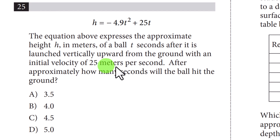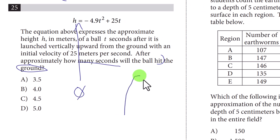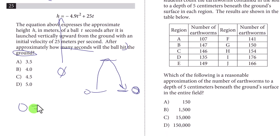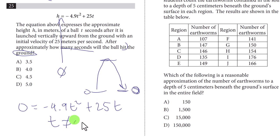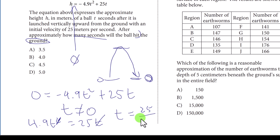Question twenty-five: how many seconds until the projectile hits the ground? Set height to zero: 0 equals negative 4.9t² plus 25t. We want the solution where t is not zero, so factor out t: 4.9t equals 25, giving t equals 25 divided by 4.9. Using a calculator, that's approximately 5 seconds.